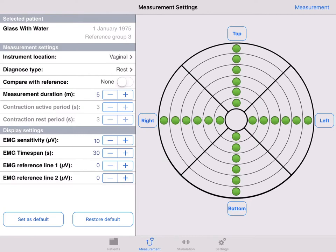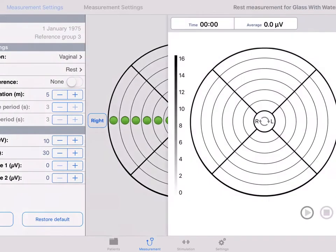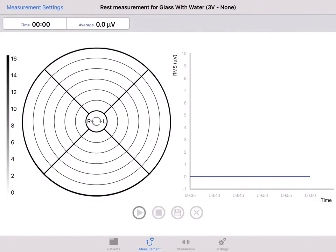Press measurement on the top right. You see the type of measurement, patient name, reference group, and comparison none or average on the top of the screen.